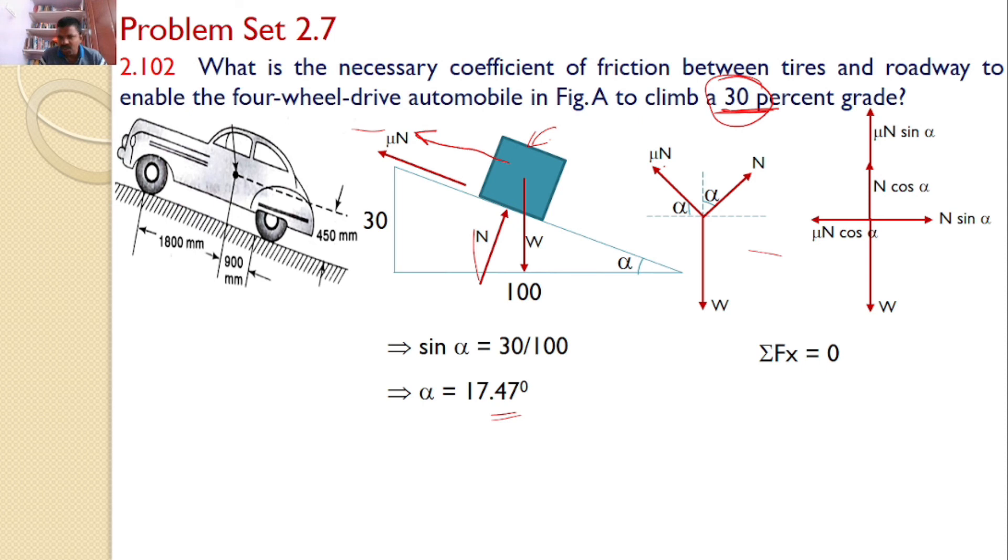Now take sigma FX is equal to 0. Then I will get mu N cos alpha is equal to N sine alpha. On simplification, you will get tan alpha is equal to mu. And alpha value is given as 17.47. So tan 17.47 is equal to mu or mu is equal to 0.314 is the answer.